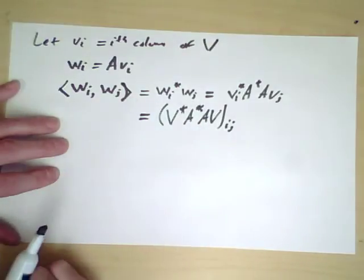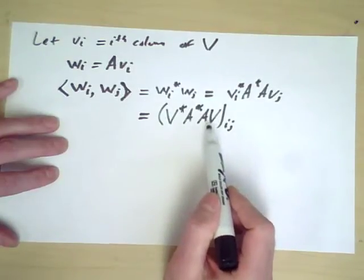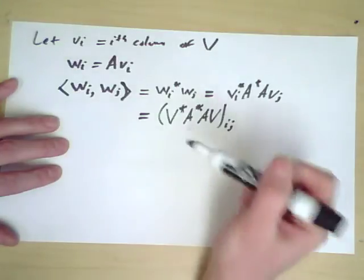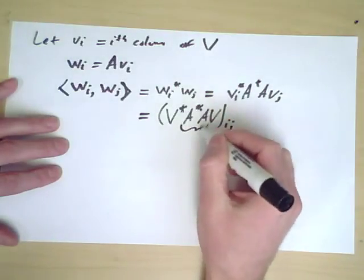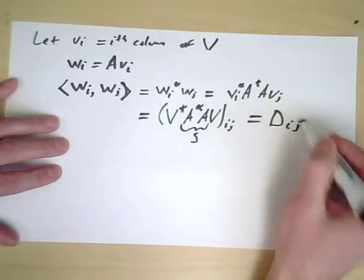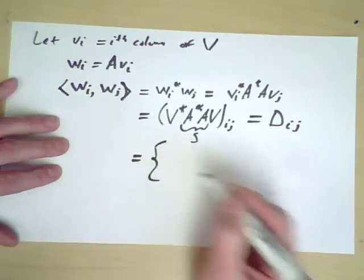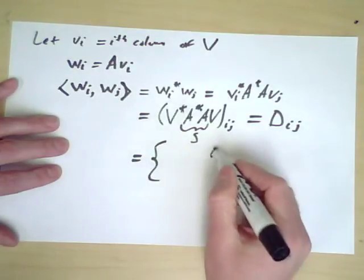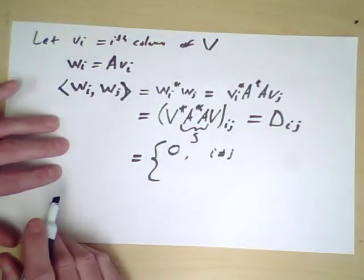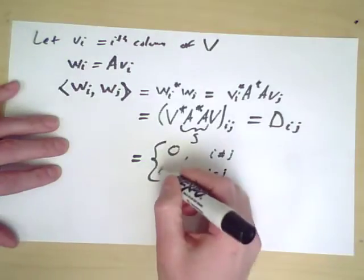Now this, because V is the matrix of eigenvectors for A star A, which I previously called S, this is merely DIJ, our diagonal matrix. So we have two possible answers. If I is not equal to J, we simply get zero because this is a diagonal matrix. If I equals J, we pick up that diagonal entry DII.